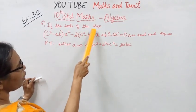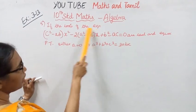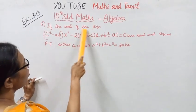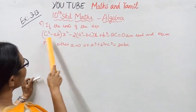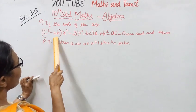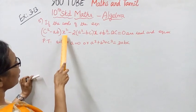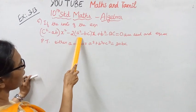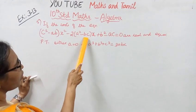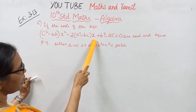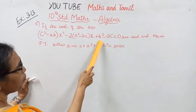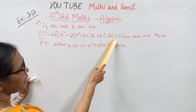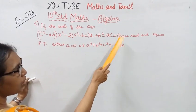If the roots of the equation: (c² - ab)x² - 2(a² - bc)x + (b² - ac) = 0 are real and equal.